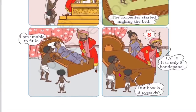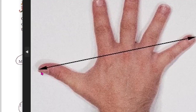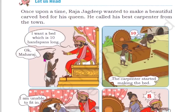Let's look at the first picture. In the first picture, the king is giving an order: 'I want a bed which is 10 handspans long.' वो एक पलंग चाहिए जो दस बालिश लंबा होना चाहिए। Children, what is a handspan? The distance from your thumb to your little finger - that distance is called one handspan (एक बालिश). So the king said: I want a 10-handspan long carved bed.